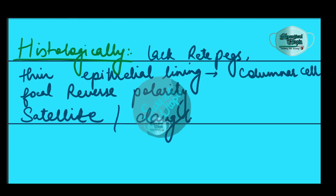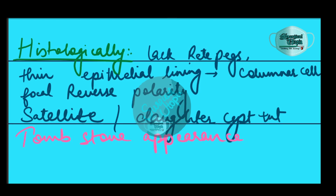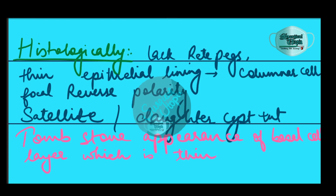The basal cells are an indication of the odontogenic origin as they resemble pre-ameloblasts. The epithelium can separate from the wall, resulting in islands of epithelium that can go on to form satellite or daughter cysts, leading to an overall multilocular cyst. In case of an inflamed cyst, hyperplastic epithelium will be seen, which is no longer characteristic of OKC and can resemble a radicular cyst.